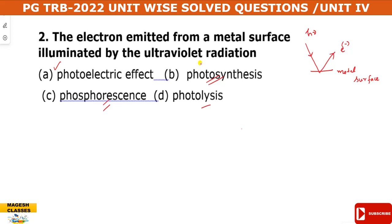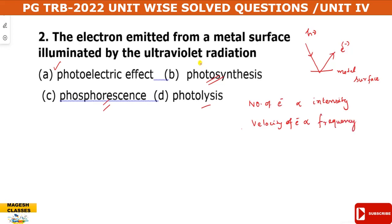In the photoelectric effect concept, the number of electrons emitted depends on the intensity of the light, while the velocity of the electron depends on the frequency of the light. Electrons are emitted from the metal surface when the frequency of light exceeds the threshold frequency.